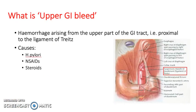An upper GI bleed is defined as a hemorrhage arising from the upper part of the GI tract, i.e. proximal to the ligament of Treitz. Causes include H. pylori, NSAIDs, and steroids — all of which can lead to peptic ulcer. The ligament of Treitz marks the boundary: anything above it is upper GI, anything beyond it is lower GI.